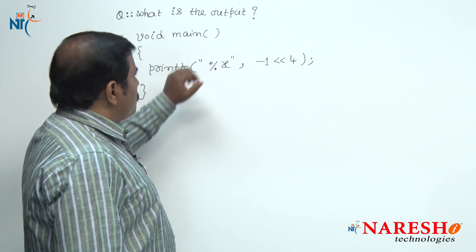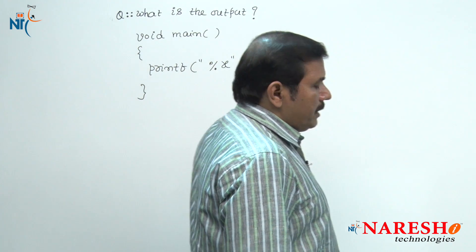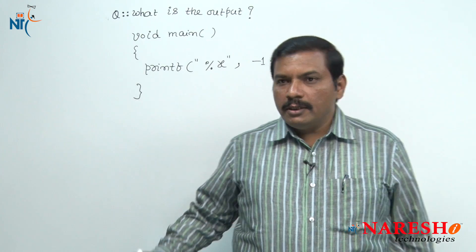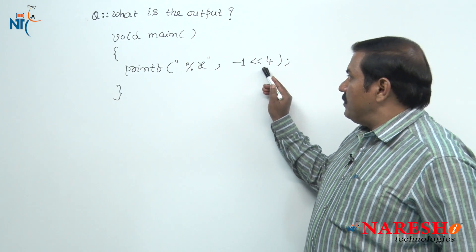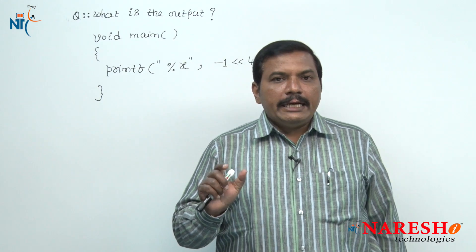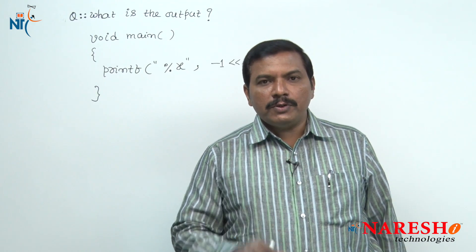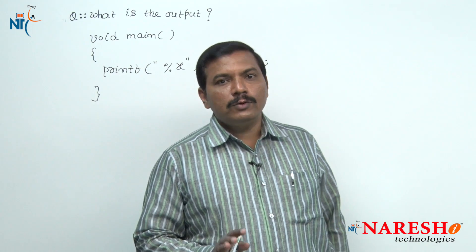Let us ask this question: one of the expressions given in this code is minus 1 left shift 4. Minus 1 is a negative number. Negative numbers are represented inside the computer memory in the form of 2's complement.